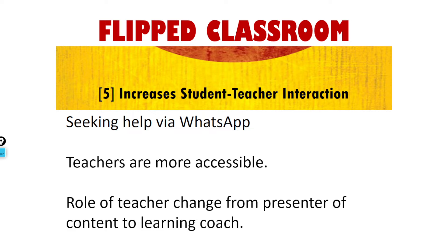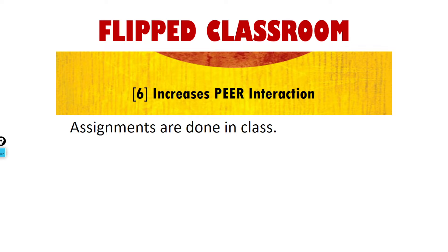The flipped classroom increases peer instruction. Assignments are done in the class. Peer instruction means one student can get information from another student. When students use social media and cell phones and other gadgets, they can share information with each other both inside and outside the class. In the past, students felt burdened by assignments, but in the flipped class most assignments are done in the classroom. Discussion and collaboration are also allowed, and groups can be formed according to interest and different abilities.